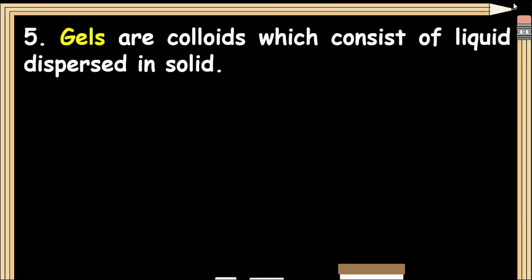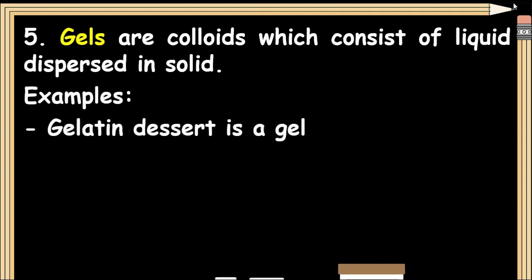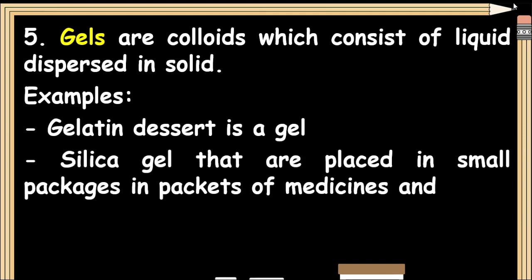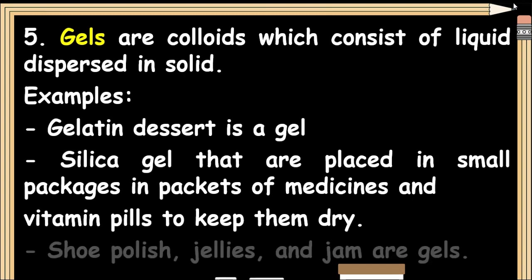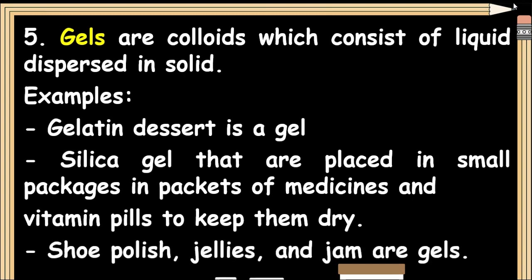Gels are colloids that consist of liquid dispersed in a solid. Examples include gelatin dessert, silica gel placed in small packages inside packets of medicines and vitamins to keep them dry, shoe polish, jellies, and jam.